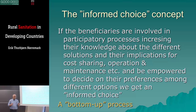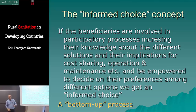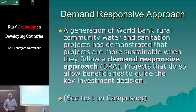Informed choice is when you, in sanitation, give people several options and explain very well what the implications are, what the costs are, how to build it, how to maintain it, and what it costs to operate. You give them several choices with the information so they can make an informed choice — that's what we call a bottom-up process in sanitation. It's an element of the demand-responsive approach, a concept developed by the World Bank. There should be a text uploaded on CampusNet.